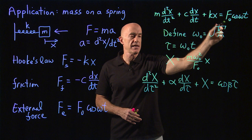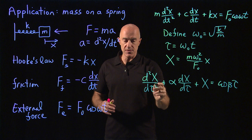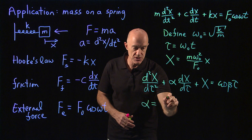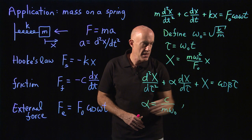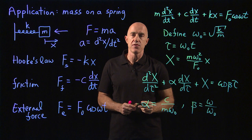So the non-dimensionalization returns exactly the same equation as for the LRC circuit, except now the definitions are different. This alpha here, which plays the role of a damping coefficient, is c over m omega naught squared. And this beta here is still omega over omega naught, but omega naught is different. Omega naught here is square root of k over m.